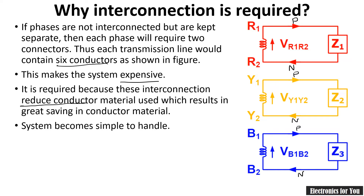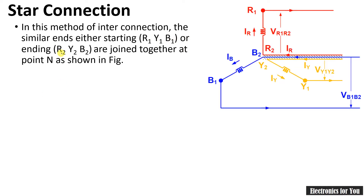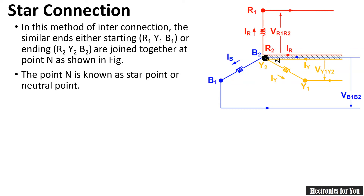The system also becomes simpler to handle. That is the need for interconnection. The first type is star connection, where similar ends — either starting ends R1, Y1, B1 or ending ends R2, Y2, B2 — are joined together to form one point. In a three-phase connection we have red, yellow, and blue (RYB) wires. For example, R2, B2, and Y2 are connected together forming one junction known as N.